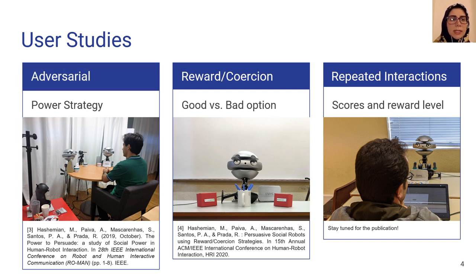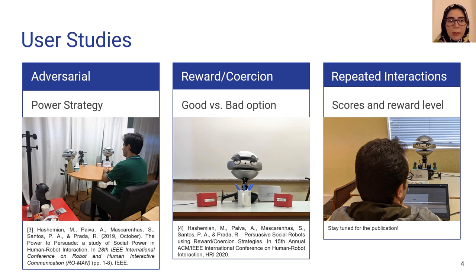In the first study, two robots were competitively trying to persuade the user to select a coffee that they were promoting, using expert and reward power strategy compared with a control condition.